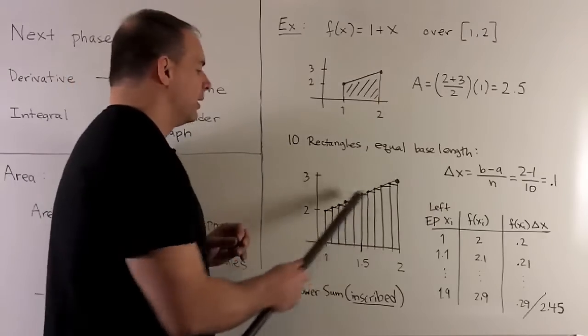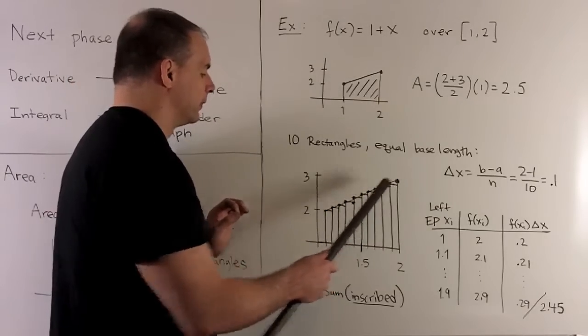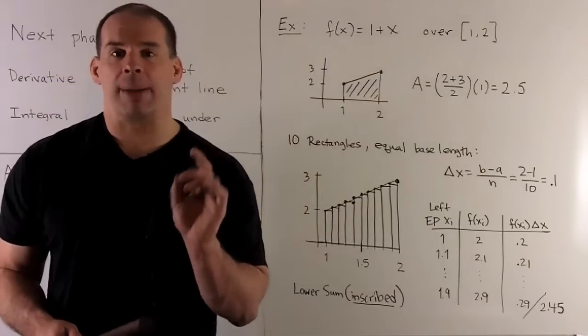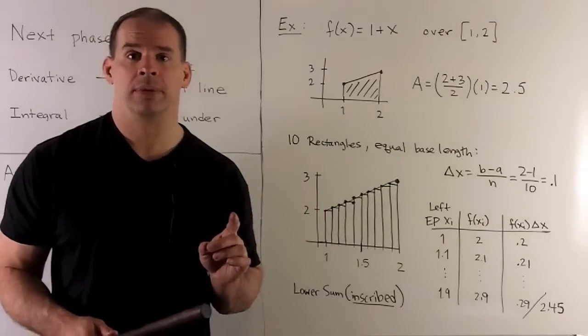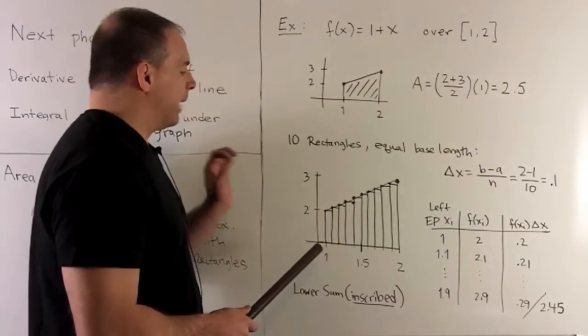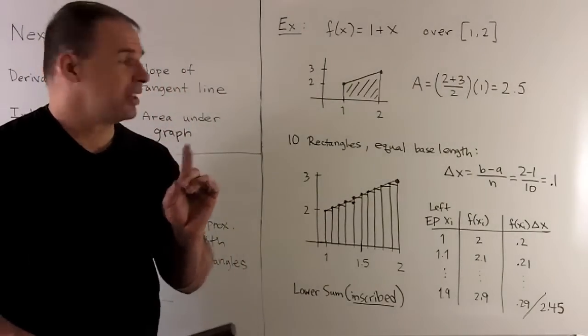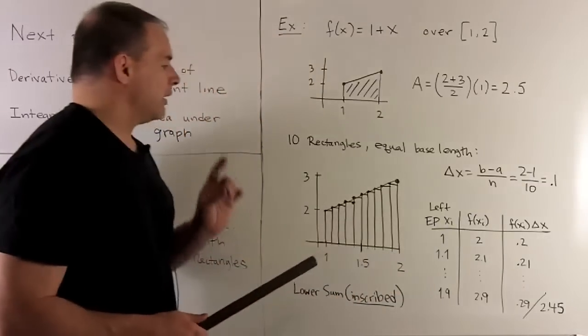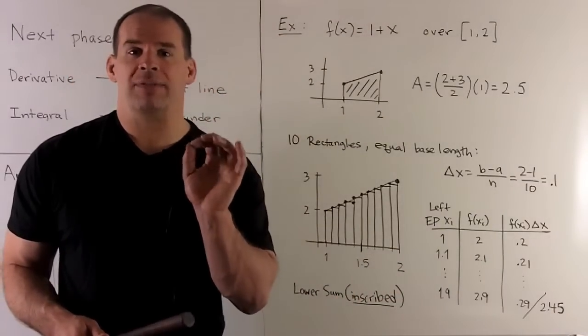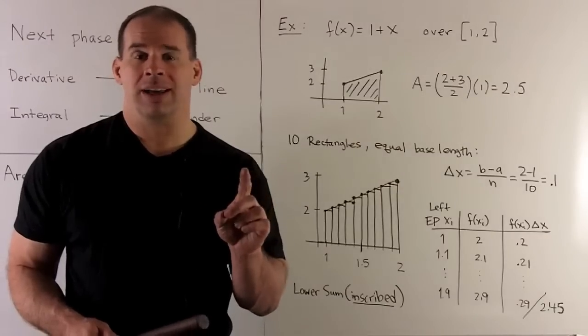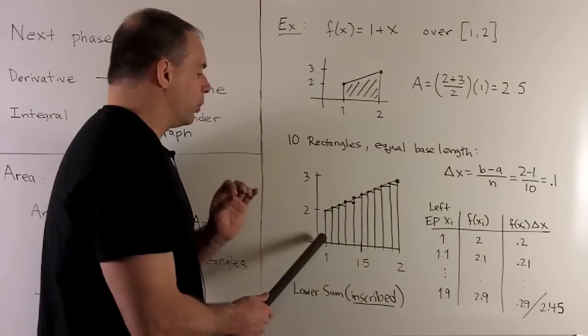Now, we're going to take our graph and fill it in with 10 rectangles that are underneath the graph. So, call it inscribed rectangles, and then the approximation is going to be called the lower sum. We need the base and the height so we can get the area of each rectangle. We already have the base. The length of the base is 0.1. If you note, each height is going to be on the graph. So, we're looking for function evaluated at an endpoint. In this case, to get our rectangles underneath the graph, we're always using the left endpoints.